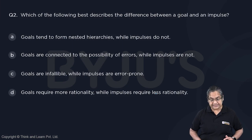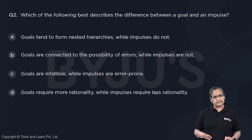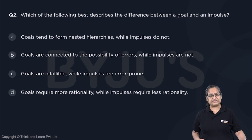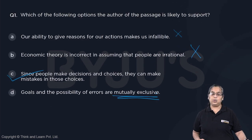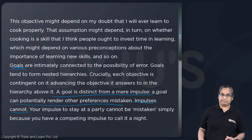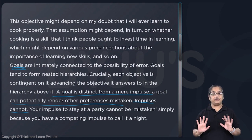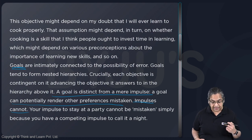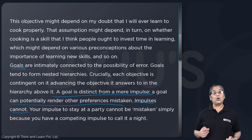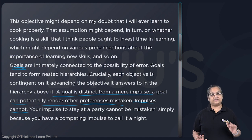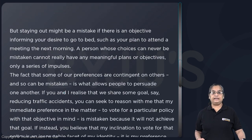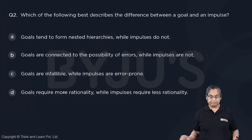Which of the following best describes the difference between a goal and an impulse? In the passage, the author has clearly stated the difference between a goal and an impulse. If you don't remember it, let's go back to that part of the passage. A goal is distinct from a mere impulse. A goal can potentially render other preferences mistaken, while impulses cannot. That is what the author says — so what's the difference? Let's look at the options.